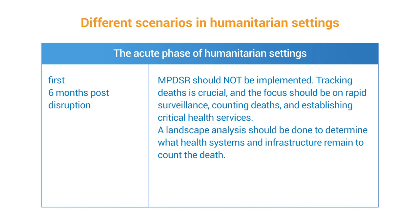Different scenarios exist in humanitarian settings based on duration. In the first six months post-disruption — the acute phase — MPDSR should not be implemented. Tracking deaths is crucial and the focus should be on rapid surveillance, counting deaths, and establishing critical health services. A landscape analysis should be done to determine what health systems and infrastructure remain to count the deaths.